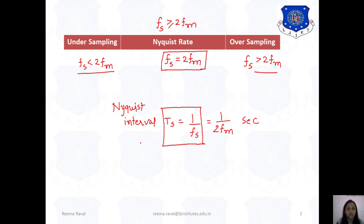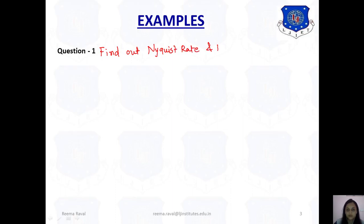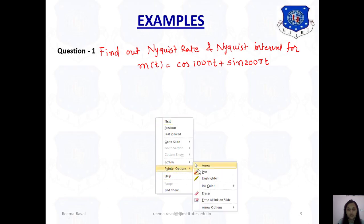Now let's see examples. For question number 1, find out the Nyquist rate and Nyquist interval for the signal given as m(t) = cos(100πt) + sin(200πt).